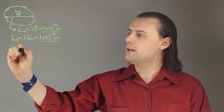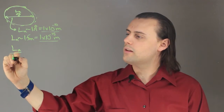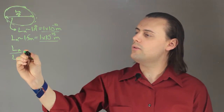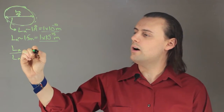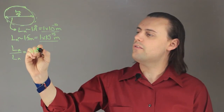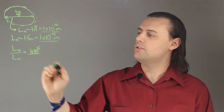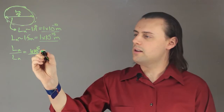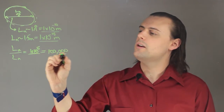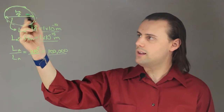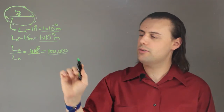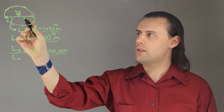So if we divide the length scale of the atom by the length scale of the nucleus, we end up with 1 times 10 to the 5 — and this is unitless, of course — which is equal to 100,000. So we see that lengthwise, the atom is 100,000 times larger than the nucleus.